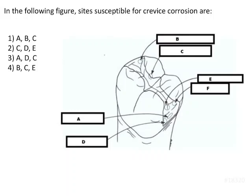In the following figure, sites susceptible for crevice corrosion are? So before continuing with this question, we should know the theory and that is the types of the electrochemical corrosion we should know.